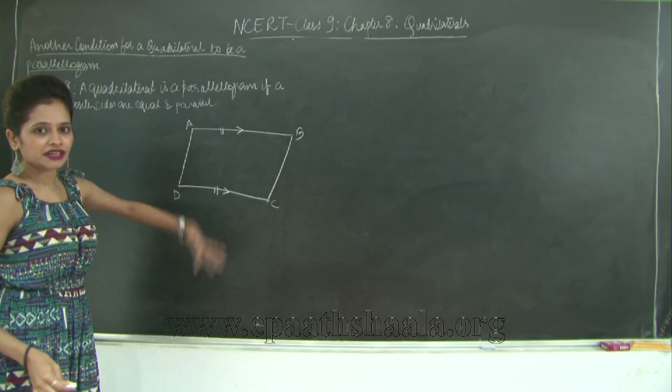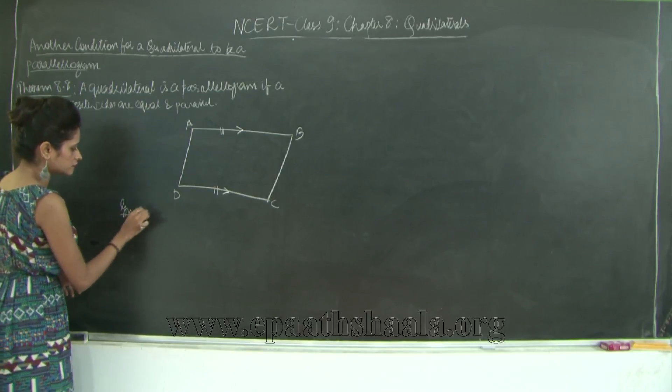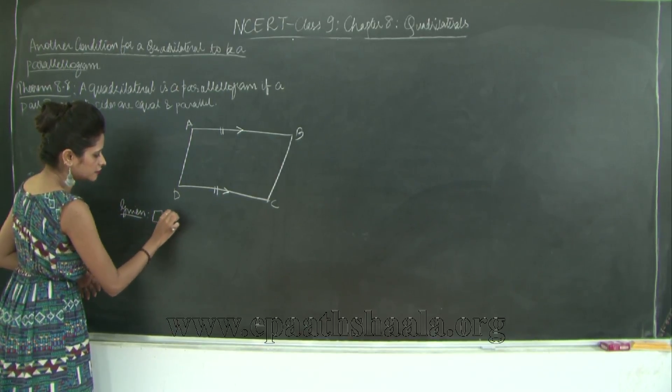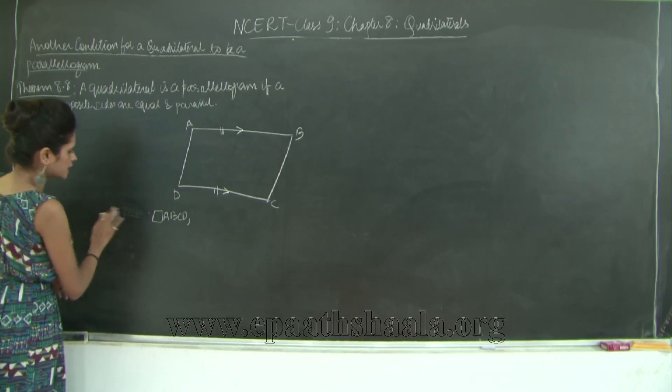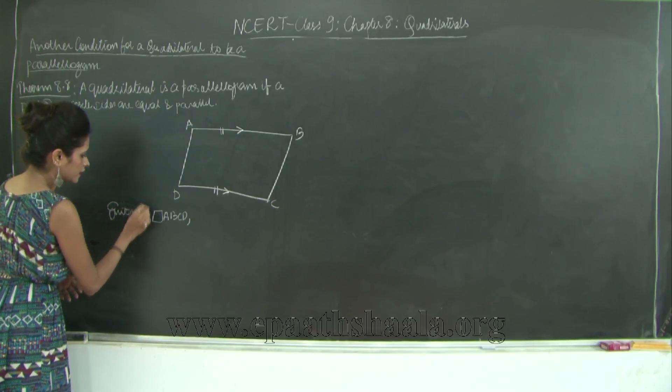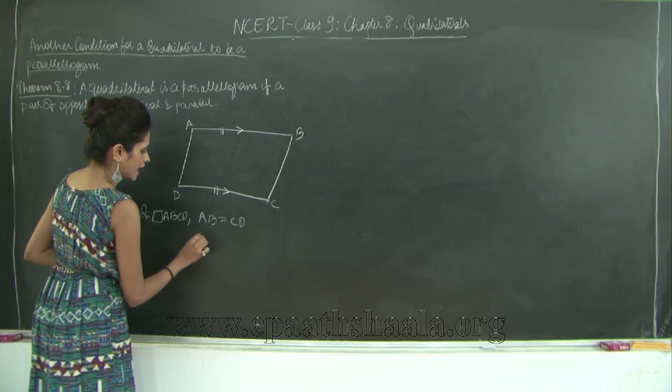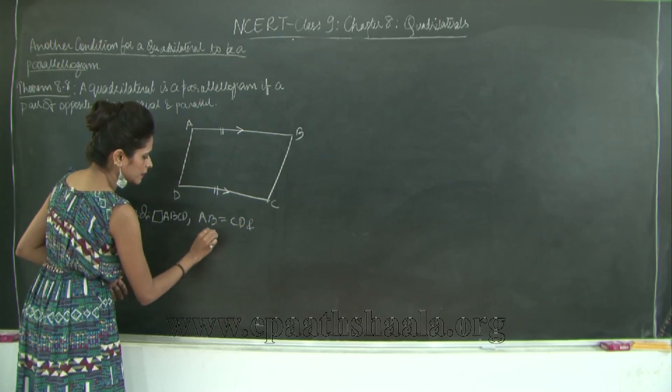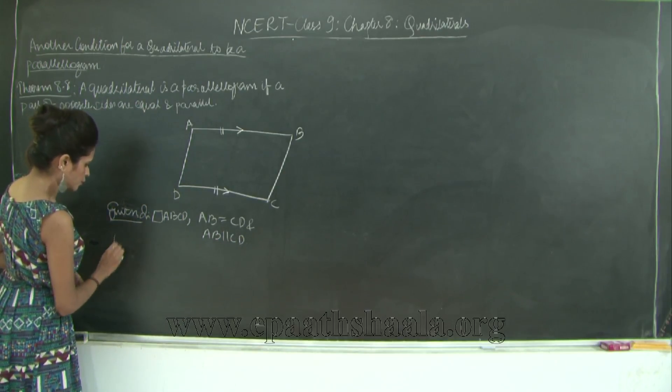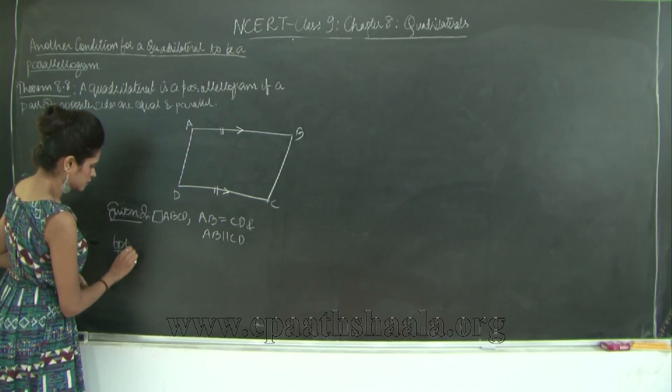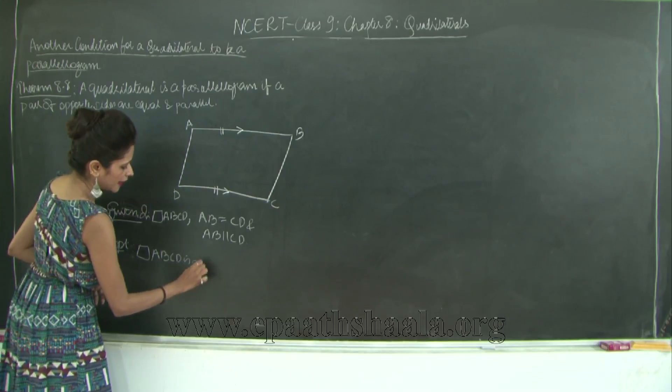So let us first write the given data and then go ahead and prove. So I will say given quadrilateral ABCD: AB is equal to CD and AB is parallel to CD. To prove that quadrilateral ABCD is a parallelogram.